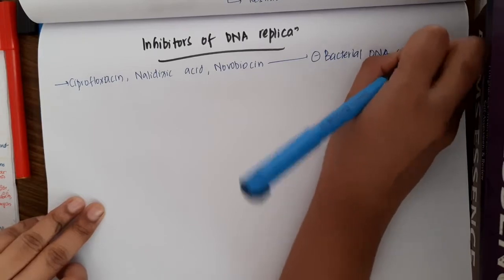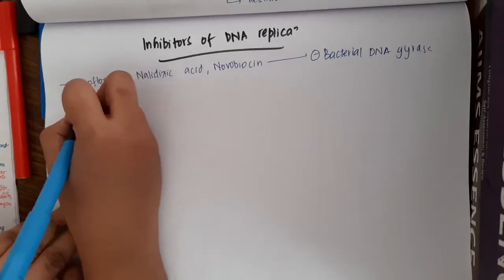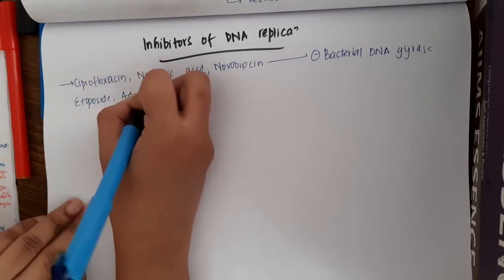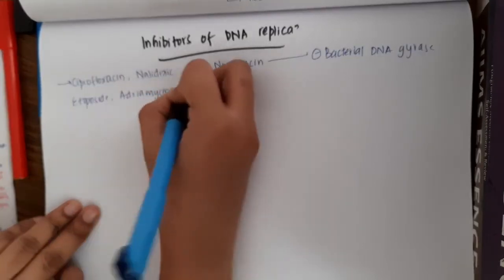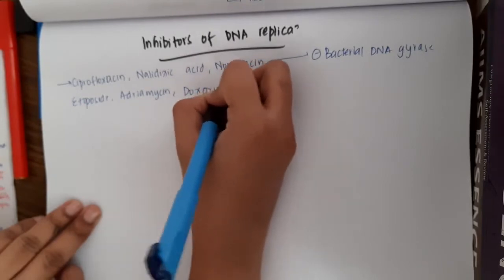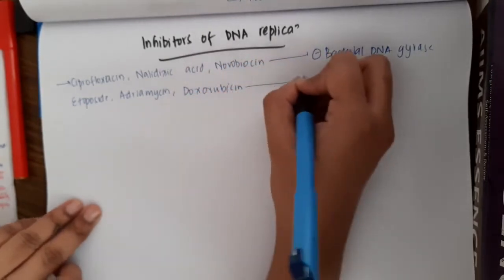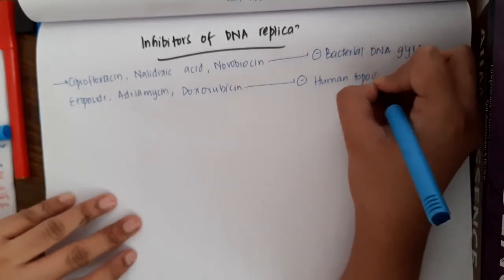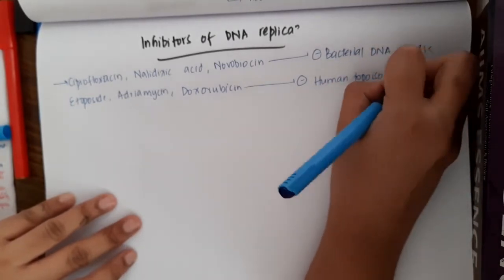Then the anti-cancer agents like etoposide, adriamycin, and doxorubicin will inhibit human topoisomerases.